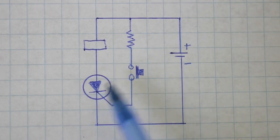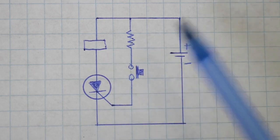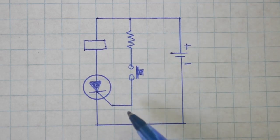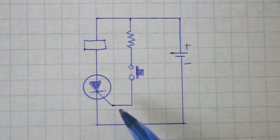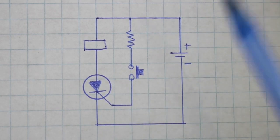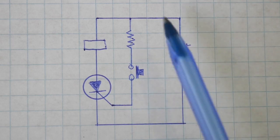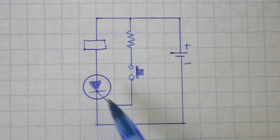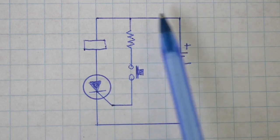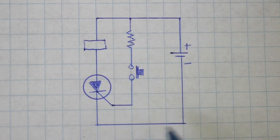In order for the tyristor to close and permit the pass of current, we need to apply a small voltage or current to the gate. Therefore, we have this switch. When we press the switch, a small current flows through the gate, the tyristor closes, and the current can flow through our load.